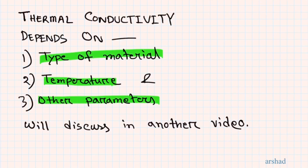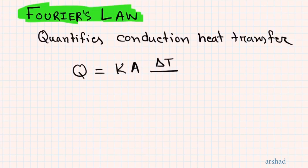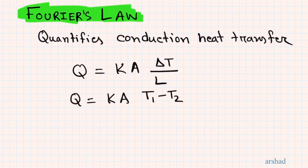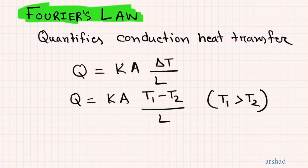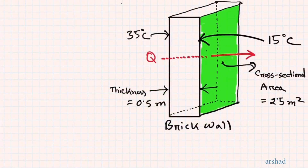To summarize Fourier's law: it quantifies conduction heat transfer only, not convection or radiation. Mathematically it is written Q = K·A·ΔT / L, or equivalently Q = K·A·(T1 − T2) / L, where T1 must be greater than T2 because heat always flows from higher to lower temperature. The second form is very convenient to use in many situations.